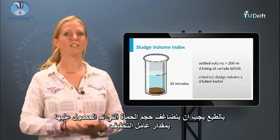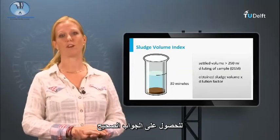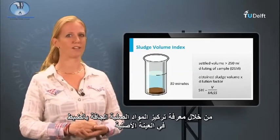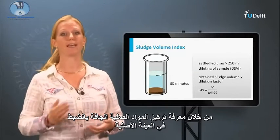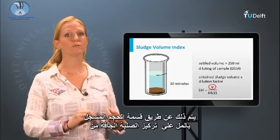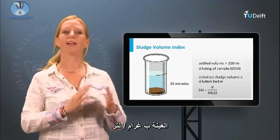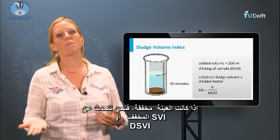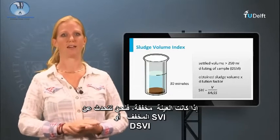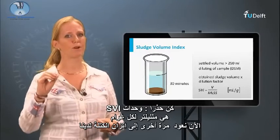Of course, the obtained sludge volume needs to be multiplied with its dilution factor for the correct answer. By knowing the exact dry solid concentration in the original sample, a sludge volume index can be calculated. This is done by dividing the registered volume in milliliters by the dry solid concentration of the sample in grams per liter. If the sample was diluted, we speak about the diluted SVI or DSVI. Be careful, the units of SVI are milliliters per gram.